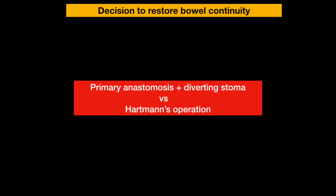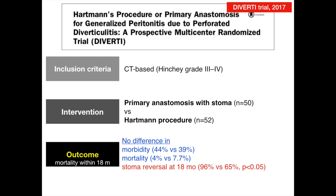Another option is primary anastomosis with a diverting loop ileostomy instead of the Hartmann procedure. The DIVERTI trial is a multicenter trial from 2008 to 2012 comparing primary anastomosis versus Hartmann procedures, including patients with purulent and fecal peritonitis. Results showed no difference in morbidity or mortality. However, the stoma reversal rate was significantly higher in the primary anastomosis arm — in other words, ileostomy closure is easier to perform than Hartmann reversal.